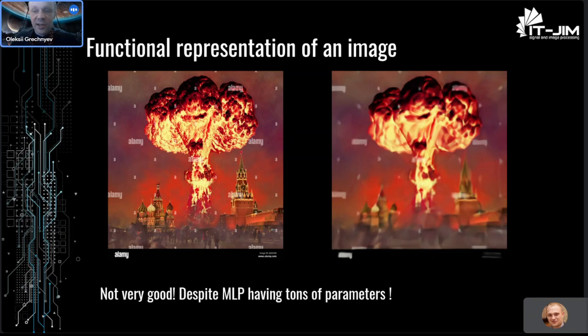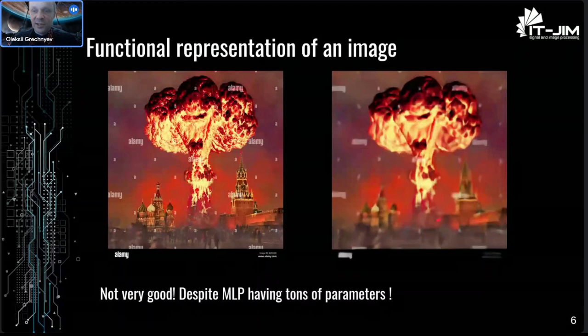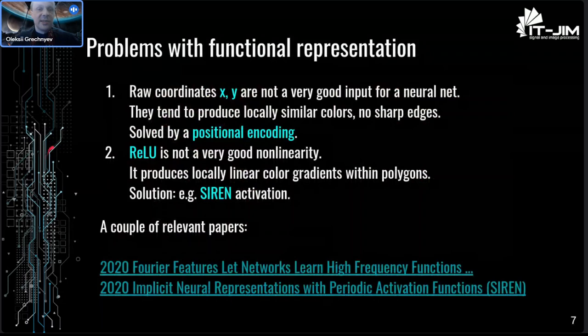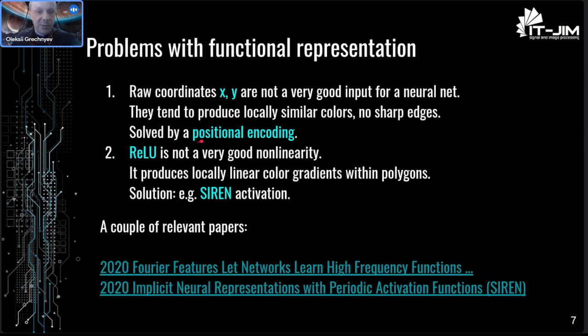Such a network will not generalize to any other images in any way. If you do such an experiment, typically you get something like this: here is the original image and here is the image rendered from the trained neural network. Of course it looks pretty similar, but small details are missing and it looks kind of ugly, despite the fact that the neural network had more parameters than pixels in the original image. Why is it so? There are two reasons. First, raw coordinates x, y are not a very good input for a neural network, and this is solved commonly by positional encoding. Second, ReLU is not a very good non-linearity because it gives locally linear functions — there are better activation functions like SIREN. With these two improvements, you can easily get a realistic quality of encoding an image.